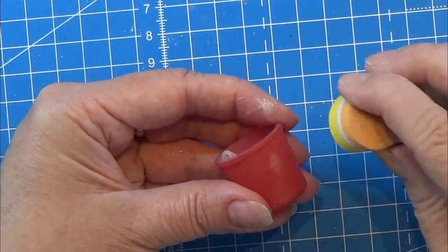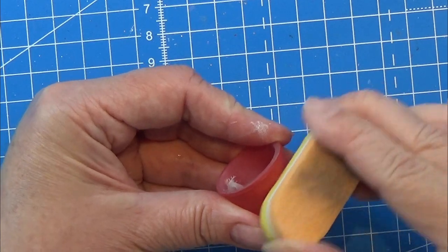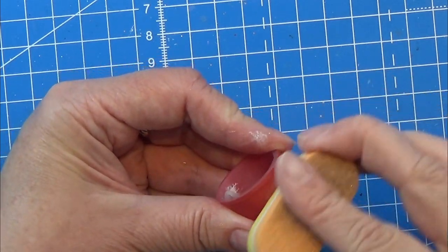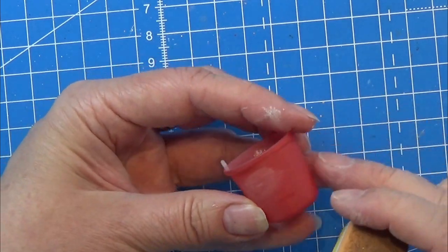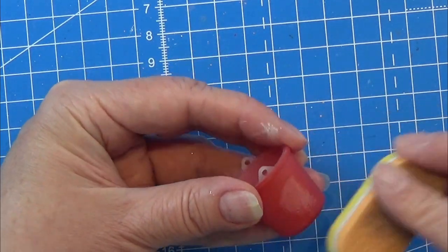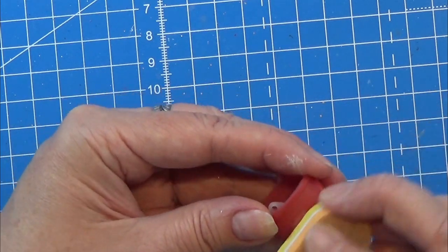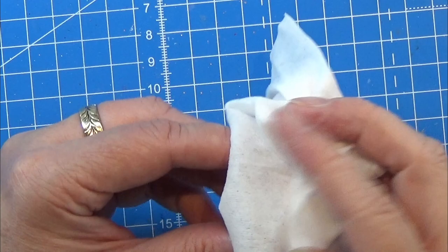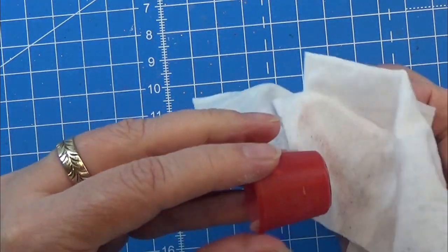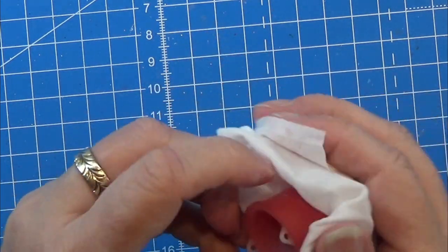I decided to sand this a tiny bit as it has a few bumps in the paint that I did not like. So I sanded it and then I actually painted it one more time on the outside. I did clean it up with a baby wipe before I painted again.